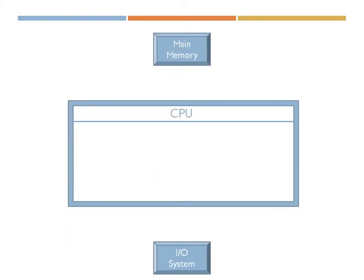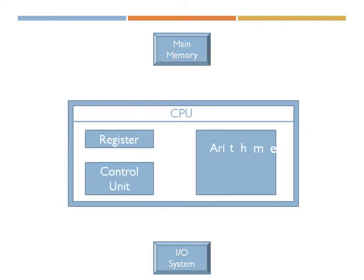A computer consists of main memory, CPU, and I/O. The CPU consists of additional components not discussed in the original Von Neumann machine description, including registers, as well as the control unit and arithmetic and logic unit. We will now discuss the connectivities between them — how they send and receive information and what kind of interconnections exist between them.